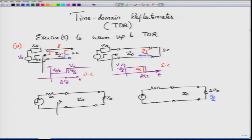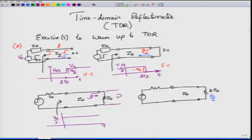If the transmission line is terminated with a load whose impedance equals the characteristic impedance Z0, there are no reflections. When the step voltage of amplitude V0/2 arrives at the load, it is completely absorbed since the reflection coefficient is 0. This is equivalent to an infinitely long transmission line, so the launched voltage never returns.